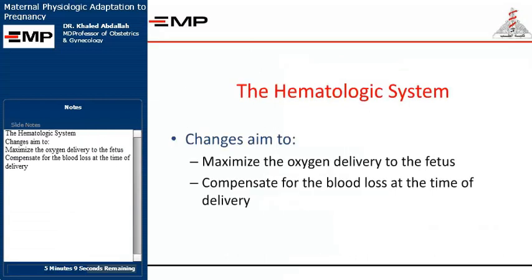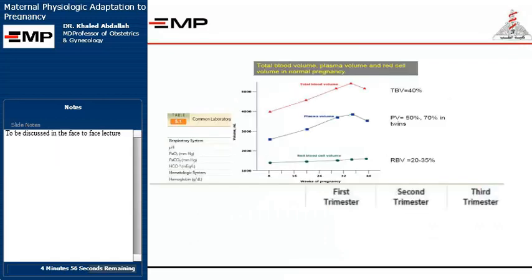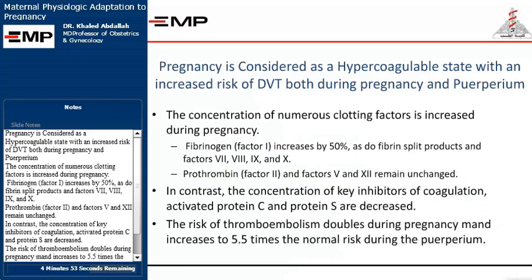The hematologic system: changes aim to maximize oxygen delivery to the fetus and compensate for blood loss at the time of delivery. Pregnancy is considered a hypercoagulable state with an increased risk of DVT both during pregnancy and the puerperium. The concentration of numerous clotting factors increases, including fibrinogen (Factor I), which increases by 50%, as do fibrin split products and factors 7, 8, 9, and X.